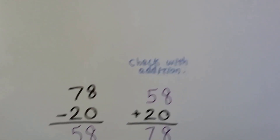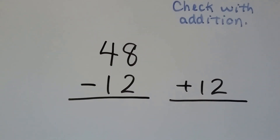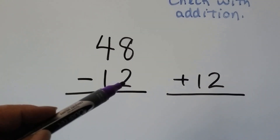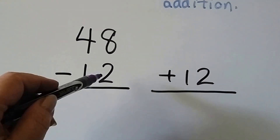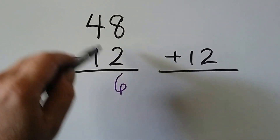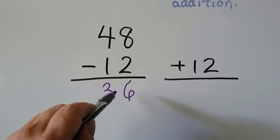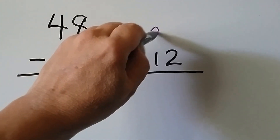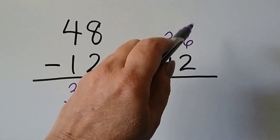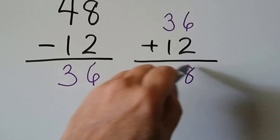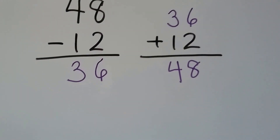Let's try it again. We have 48 minus 12. Do we need to regroup? This 2 is smaller than the 8, so no, we don't. 8 take away 2 is 6, and 4 take away 1 is 3. We put the 36 — the difference — up here as an addend and add it to the subtrahend. 6 plus 2 is 8, and 3 plus 1 is 4. We've got the same number as the minuend — we know we did it correctly.